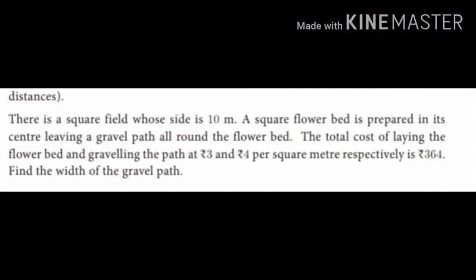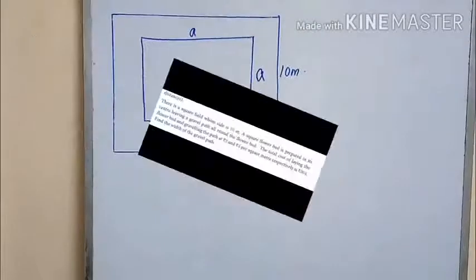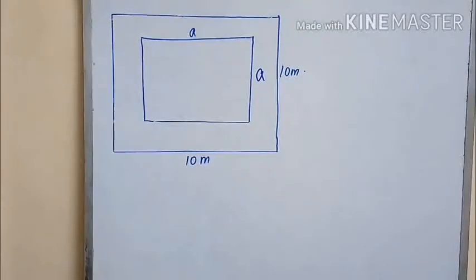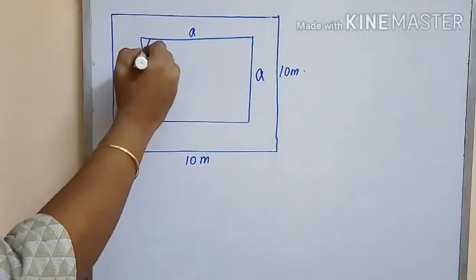The next question for today's session: there is a square field whose side is 10 meters. A square flower bed is prepared in its center, leaving a gravel path all around the flower bed. The total cost of laying the flower bed and graveling the path is rupees 3 and rupees 4 per square meter respectively, and the total cost is rupees 364. Find the width of the gravel path.